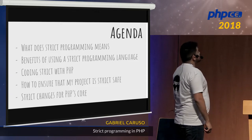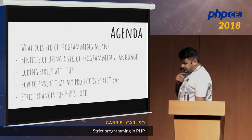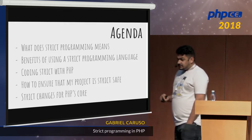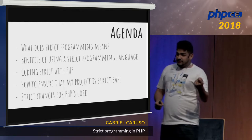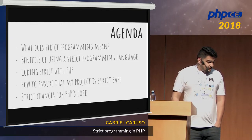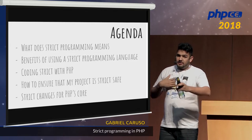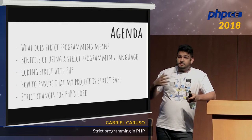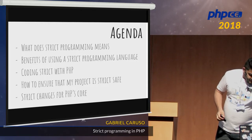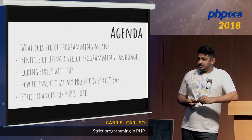Here's the agenda. We are going to talk about what strict programming and strict programming language means, because there's a little bit of difference. We'll talk about the benefits of using a strict programming language, and the benefits of using a weak programming language. We're going to talk about coding strict in PHP — the most fun and most important part. We'll also discuss how to ensure that your project is strict-safe, and the strict changes coming to PHP core.